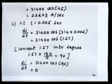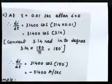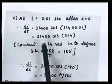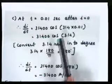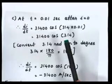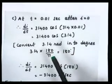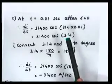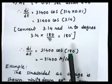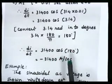For part c, t = 0.01 s after t = 0. So di/dt = 31400 cos(314 × 0.01). This gives cos(3.14). Since 3.14 is in radian, convert to degree by multiplying by 180/π — the answer is 180°. Put 180° in the equation: di/dt = 31400 cos(180°). Since cos(180°) = −1, di/dt = −31400 ampere per second.